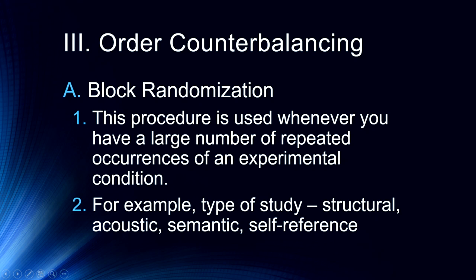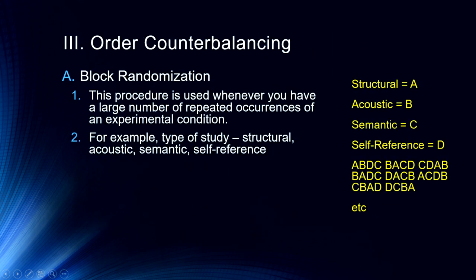We assign letters to structural, acoustic, semantic, and self-referential processing, then randomize the order within each block. So each chunk of four different encoding types will occur together, but their order within the block is randomized — for example, A, B, D, C, then B, A, C, D. This can be done easily with a computer.